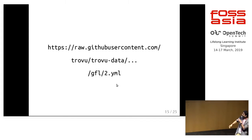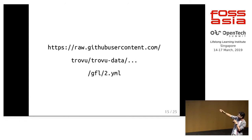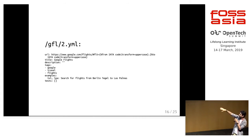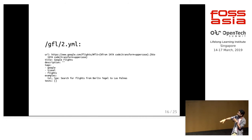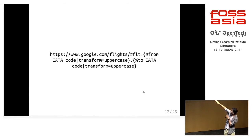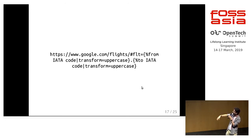Then a fetch is made to a URL on GitHub in the Trovo data repository. We look up a file at '/GFL/2.yaml'. If such a file exists, it contains YAML data. The most important line is the first one — the URL line — which contains placeholders including a 'from' placeholder and a 'to' placeholder, with some transformation applied.